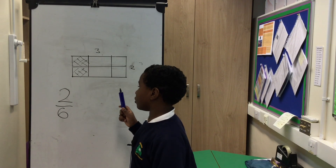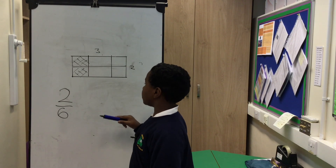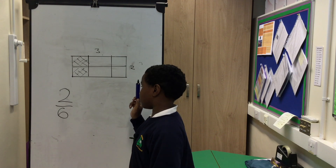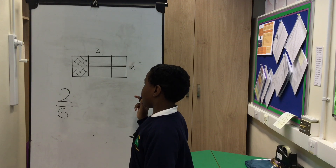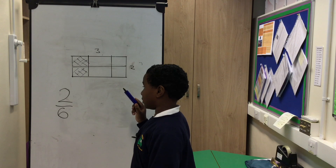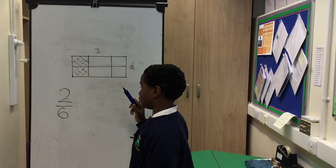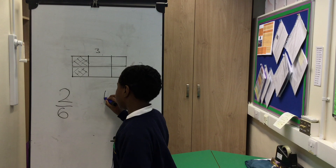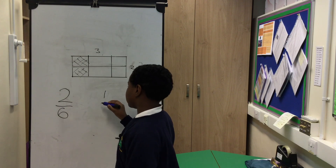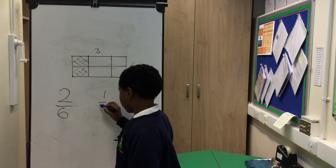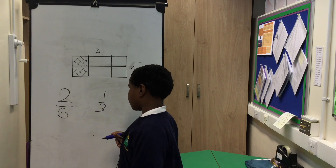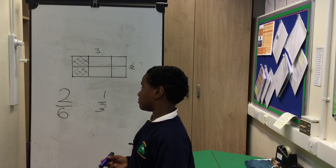So you have to find a number that you can divide 2 and 6 by. You can divide 6 by 3, but you can't divide 2 by 3. But you can divide 2 by 2 and 6 by 2. 2 divided by 2 is 1, and 6 divided by 2 is 3. The fraction is 1/3.